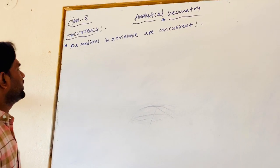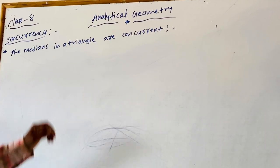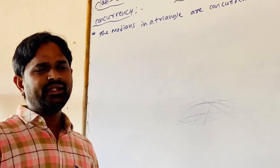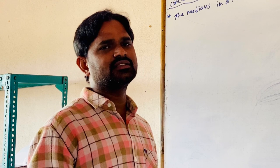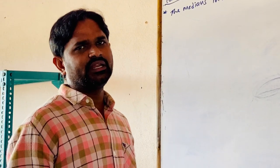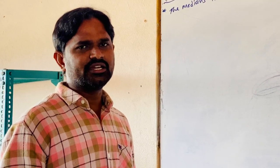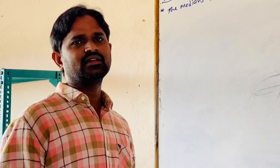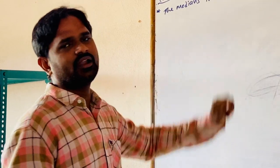In the previous class, we discussed about the concurrency of lines. What is concurrency of lines? It means two or more lines intersecting at a point. Then the point is known as the point of concurrence and the lines are said to be concurrent lines. There are so many concurrent lines in our geometry — especially in a triangle, we get the intersection of medians, altitudes, perpendicular bisectors, and internal and external angular bisectors.